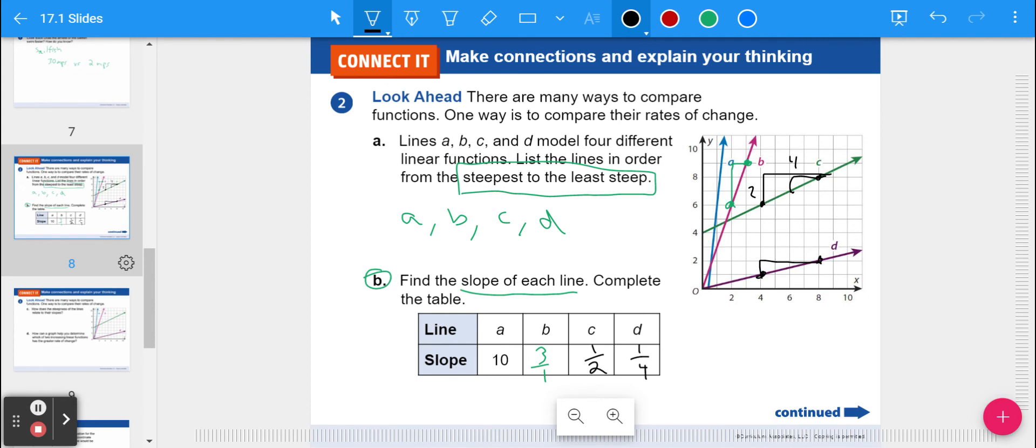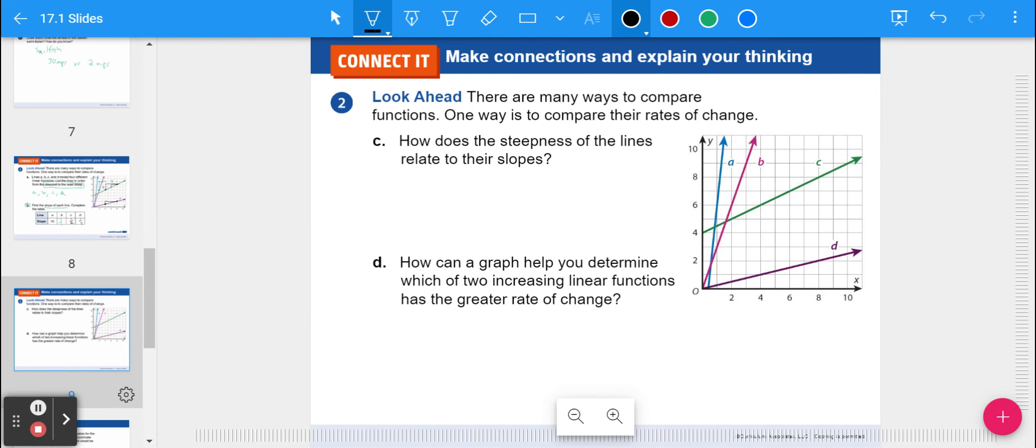You can also compare them by looking at their y-intercept. You can clearly see that line C starts up at four, whereas all the other ones start around zero. I don't know if line A is actually at zero. It might be at negative one because it's not shown there. But one of the biggest ways we're going to compare functions is using their slopes. So question C says, how does the steepness of the lines relate to their slopes? Well, bigger slopes equals steeper lines. The steeper it is, the larger the slope it's going to be.